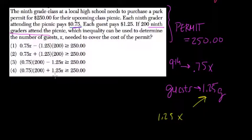Okay, so notice that all of these, the left-hand side is greater than or equal to $250. That means that the amount of money you make should be greater than the cost of the permit, which was $250.